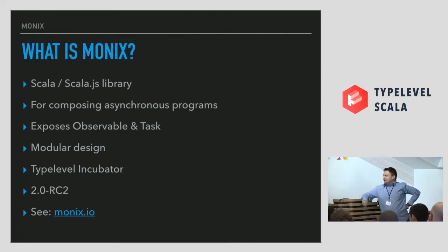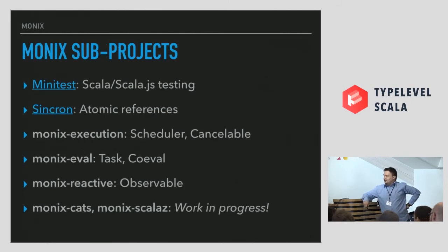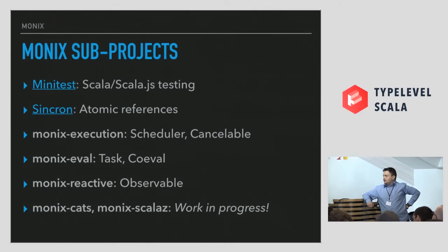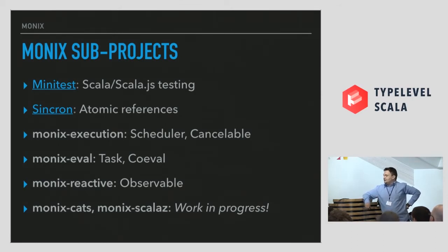Monix is a library I described yesterday. It's evolved in parallel with this project and is a modular project with no third-party dependencies. MiniTest is used for testing. Synchron is a sub-project dealing with low-level stuff like atomic references. Monix Execution deals with scheduler and cancelable. Monix Eval deals with Task, which I described yesterday, and Monix Reactive deals with Observable.